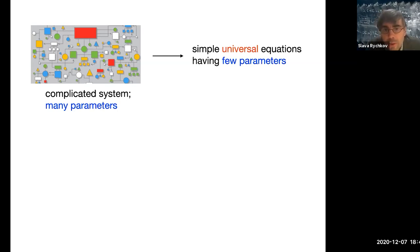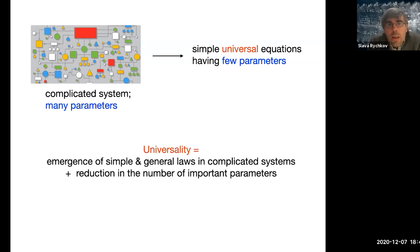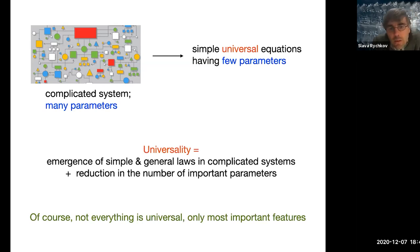So universality in physics is basically all what I just said. To summarize: by universality we mean emergence of simple and general laws in a priori complicated-looking systems, which is accompanied by a reduction in the number of relevant parameters. As a caveat, I should add that of course not everything is going to be universal — there are always going to be some tiny details which depend on the system — but the most important things are usually universal.